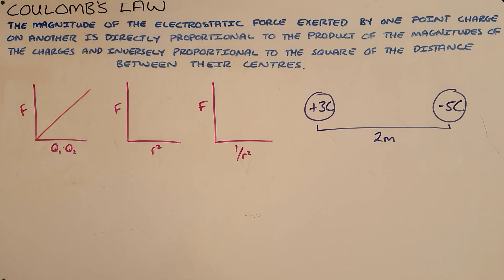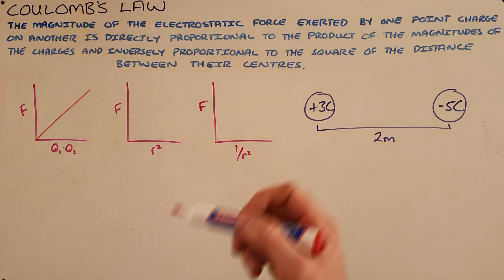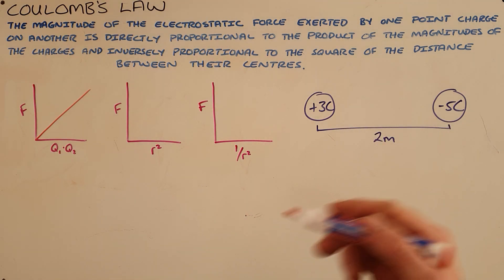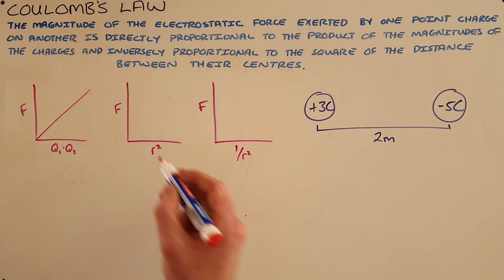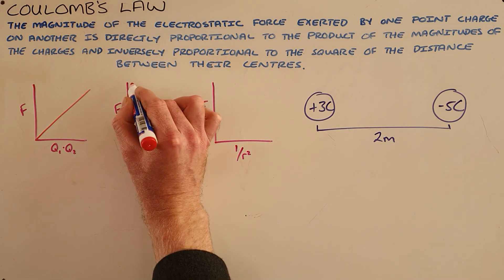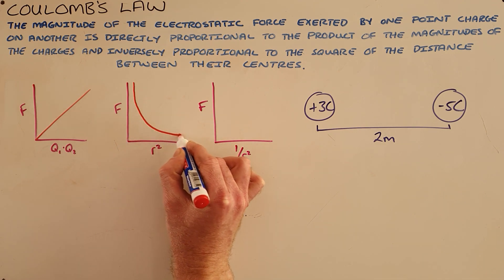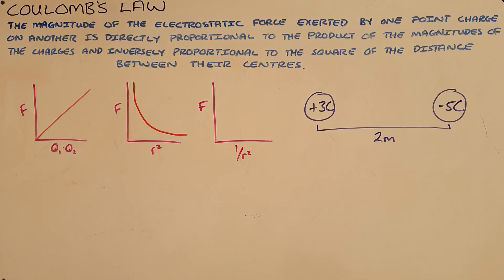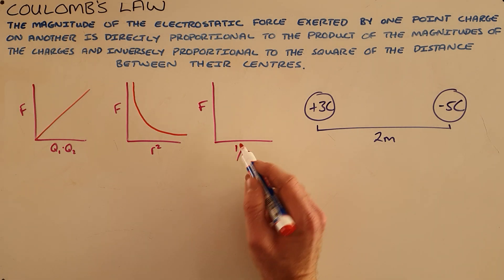Coulomb's law also states that the force is inversely proportional to the square of the distance between these objects — basically saying that the further apart these objects are or become, the smaller the force gets. It is an inverse proportion, meaning that the relationship changes exponentially.